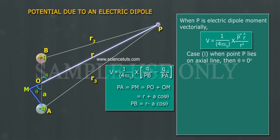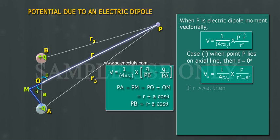Case 1: When point P lies on axial line, then theta is equal to 0 degrees. VA is equal to 1 by 4 pi epsilon naught into P bar R square minus A square. If R much greater than A, then VA is equal to 1 by 4 pi epsilon naught into P by R square.